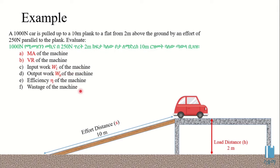We have to find the difference between the input work and the output work. I like the machine that is an inclined plane — load and surroundings. I like the efficiency of the machine, which means that the machine is more effective.